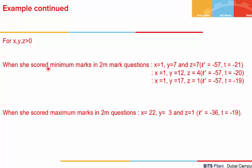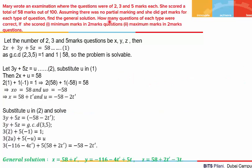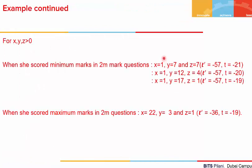For the first part — minimum marks in 2-mark questions — she answered only 1 question of 2 marks. For the second part, maximum marks in 2-mark questions: taking t′ = −36 and t = −19 gives x = 22, y = 3, z = 1. So the maximum number of 2-mark questions she attempted was 22.